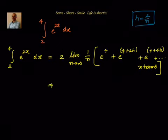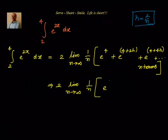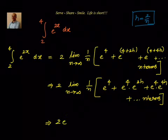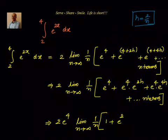The next step: 2 times limit n tends to infinity, (1/n). We can write this as e power 4 + e power 4 · e power 2h + e power 4 · e power 4h + ..., giving n terms. Factoring out e power 4, we get: 2 · e power 4 · limit n tends to infinity, (1/n) · [1 + e power 2h + e power 4h + ...].